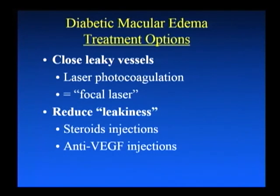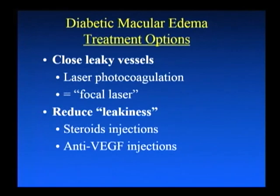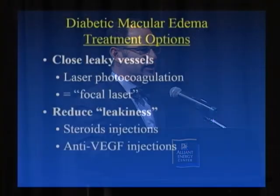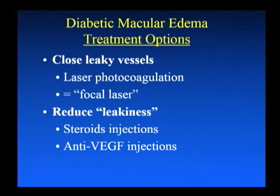So what are our treatment options? Well, first we can actually try to close the leaky vessels. We do that primarily with laser photocoagulation, and the term used when treating diabetic macular edema is focal laser — focal meaning we have small laser burns to treat the individual leaky spots. Or we can reduce leakiness, and this is something that's revolutionized our treatment: injections of medications into the eye that actually reduce the leakiness and help strengthen the blood vessels again. We can do that really in two ways: the use of a steroid or anti-VEGF (vascular endothelial growth factor) injections, more commonly used over the last five years.